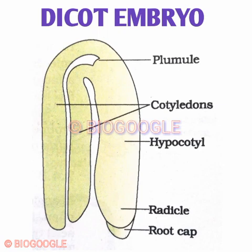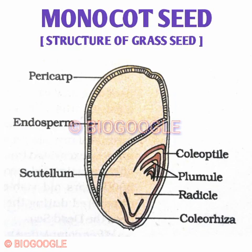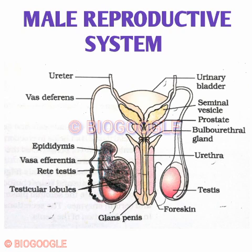Don't confuse the hypocotyl and cotyledon — the hypocotyl is the part of the embryo below the cotyledon, so show it properly. Next is the monocot embryo or grass embryo — show all parts, mainly the coleoptile and coleorhiza. Don't confuse them: the coleoptile covers the plumule, while the coleorhiza covers the radicle. Next is the monocot seed — show the aleurone layer compulsorily.